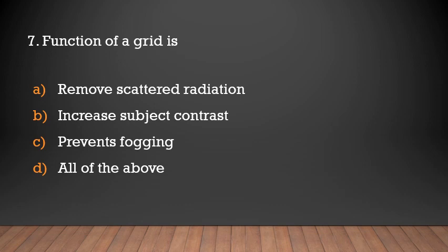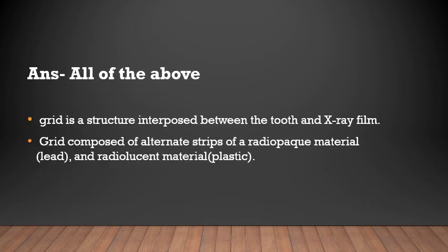The function of a grid is: remove scatter radiation, increase subject contrast, prevent fogging, or all of the above. The answer is all of the above — all these are important properties of a grid. A grid is a structure interposed between the tooth and the x-ray film, composed of alternating strips of radio-opaque material (lead) and radiolucent material (plastic).